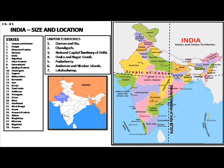The largest state of the country is Rajasthan with an area of 5,42,239 square kilometers, that is 10.4 percent of the total geographical area of India. Goa, in terms of size, is the smallest state with an area of 3,702 square kilometers.